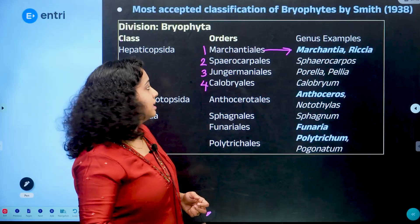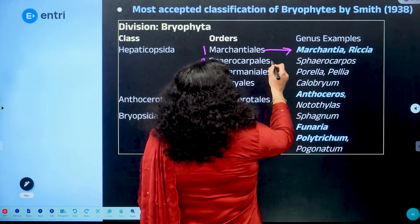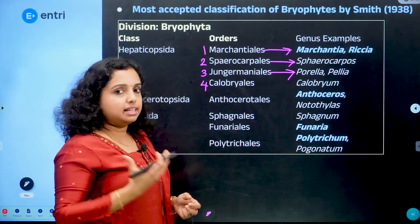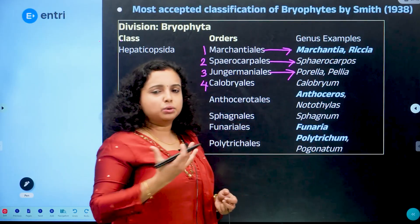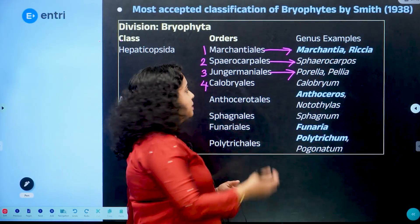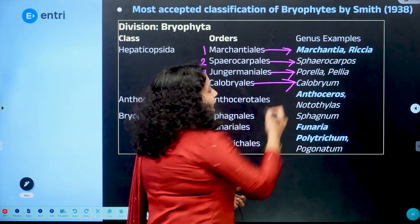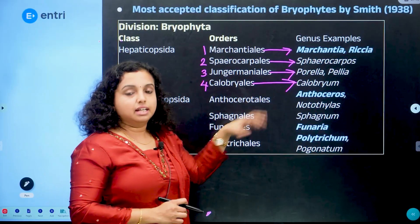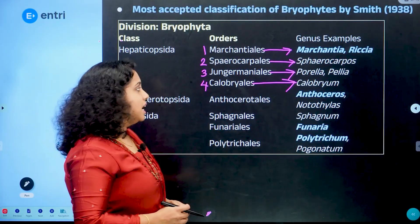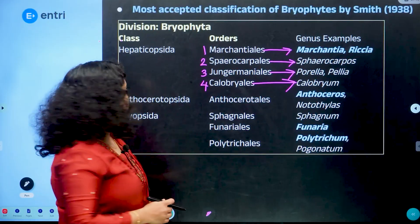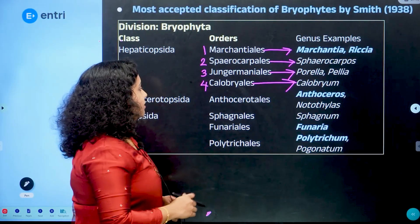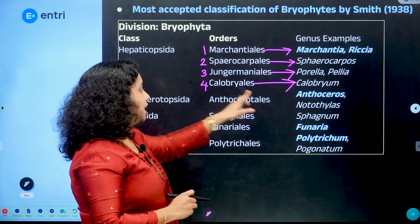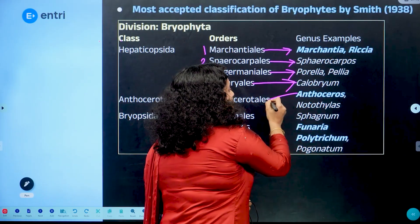The first genus name for Marchantiales is Marchantia polymorpha. For Sphaerocarpales, the genus is Sphaerocarpos. For Jungermanniales, the genus is Porella. We also use Targioni, etc. Calobryales include Calobryum. For Anthocerotopsida, there is a single order — Anthocerotales.